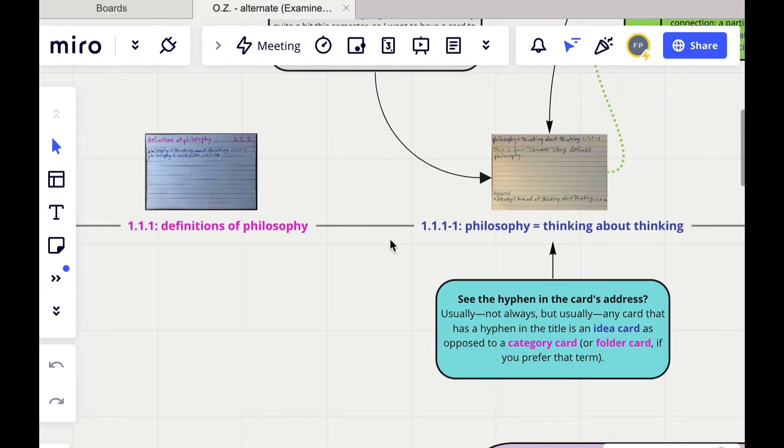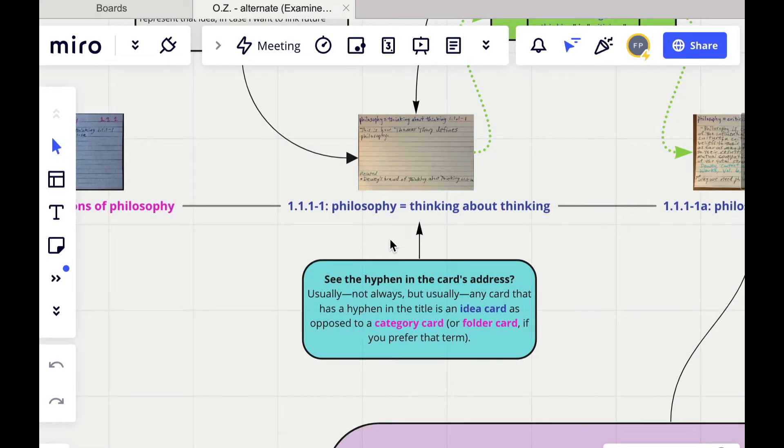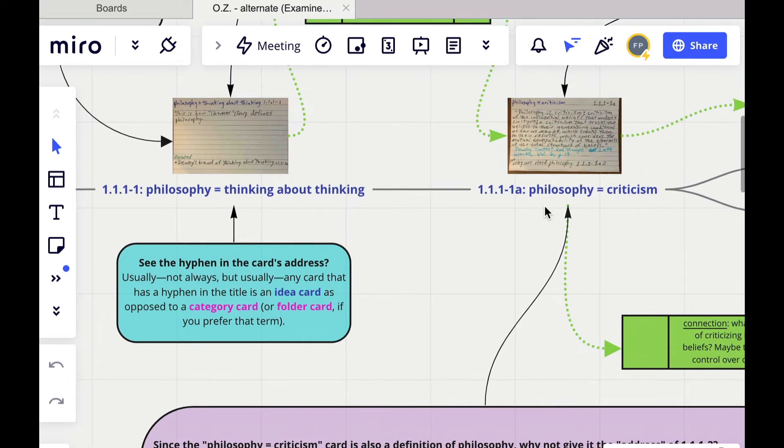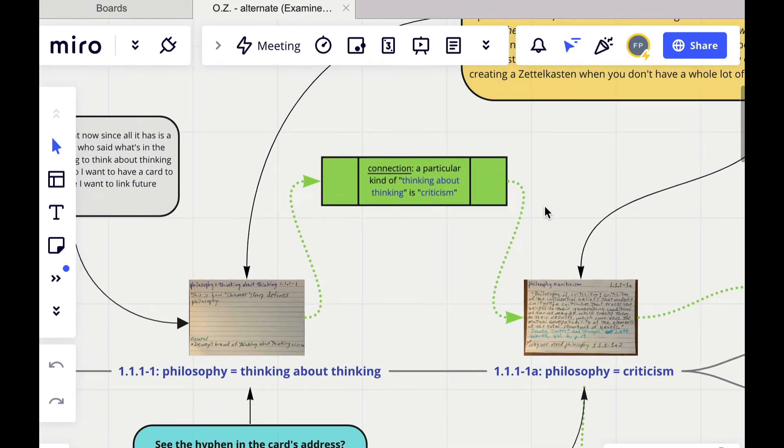And then we finally got to work creating our first what I call idea card. So this first card says that philosophy is thinking about thinking. And then the card that kind of follows upon that says that philosophy amounts to what the American philosopher John Dewey calls criticism. And on this mind map, you can see in a couple places that I've added these green boxes where I explain the connection between the cards. Because that connection, although it's clear in my own mind when I'm making the connection, is not clear on the cards themselves necessarily. And so that's why I've added this little additional explanation here.